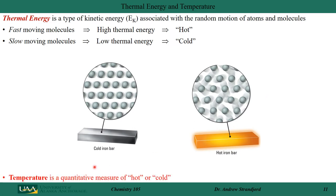For example, a cold iron bar has atoms not moving very fast. A hot iron bar has atoms with kinetic energy — they're moving — and as they transfer that kinetic energy to other atoms, temperature increases. Temperature is the quantitative measure of hot and cold; to know how fast the molecules are moving in the two iron bars, we simply measure temperature.